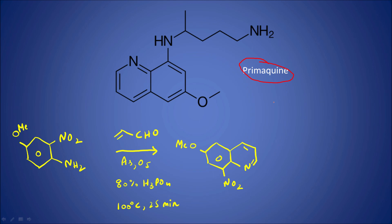This reaction is used to make primaquine, an anti-malarial drug. What they did was take a compound with NO₂ at the ortho position and an OMe group at the para position relative to the NH₂ of aniline. Acrolein — the simplest alpha-beta unsaturated aldehyde — was added along with arsenic acid (As₂O₅) as the oxidizing agent, 80% H₃PO₄ as the acid, at a temperature of 100°C. The reaction was completed in just 25 minutes.